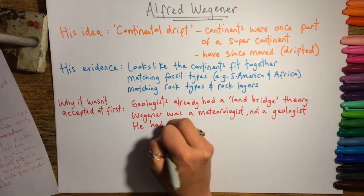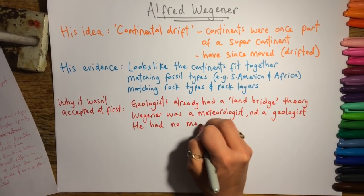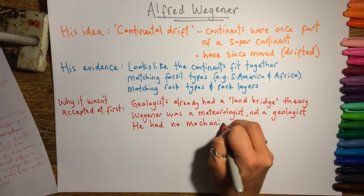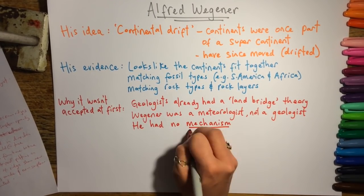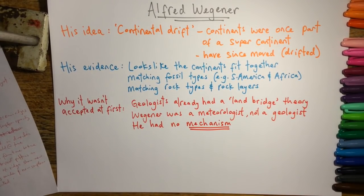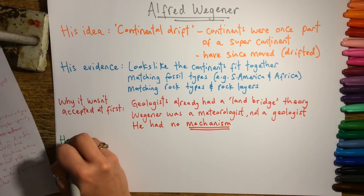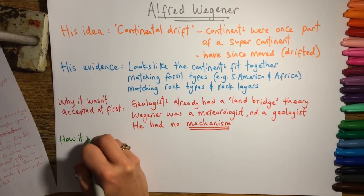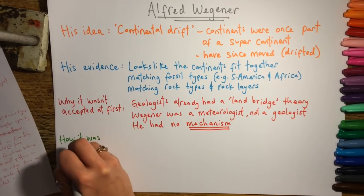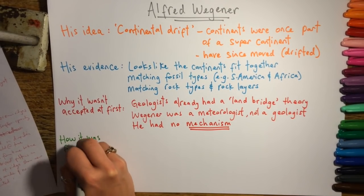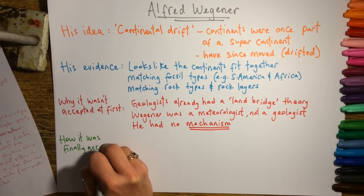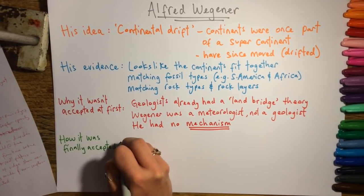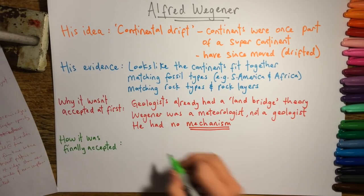But the most important reason was because he didn't have a mechanism to explain how the continents were moving. So the acceptance of Alfred Wegener's theory didn't come until after he died.